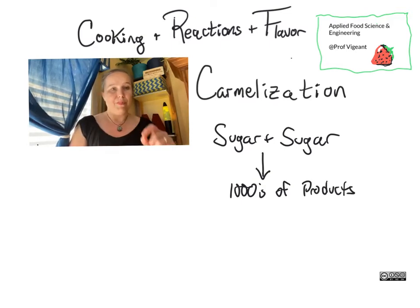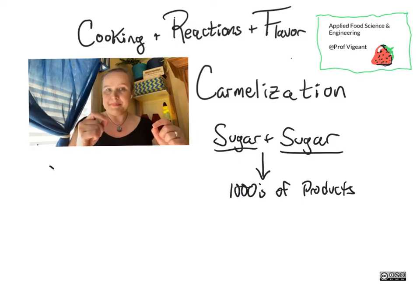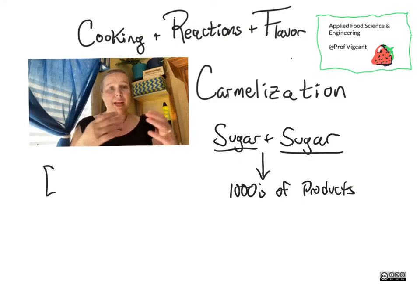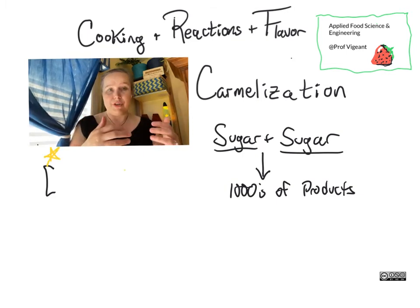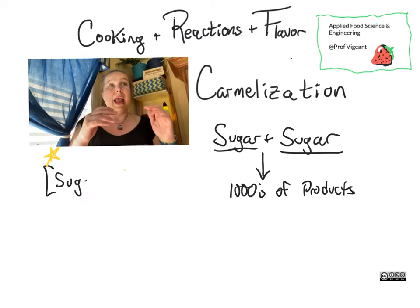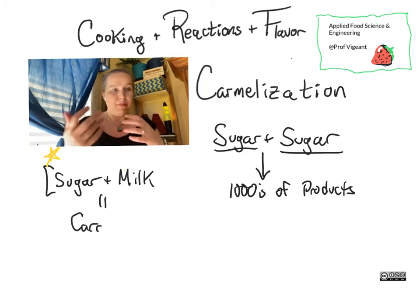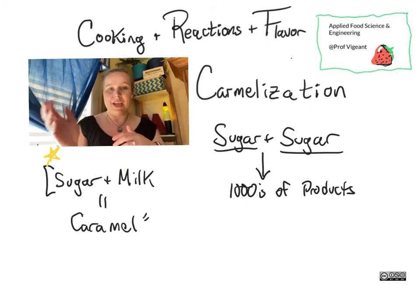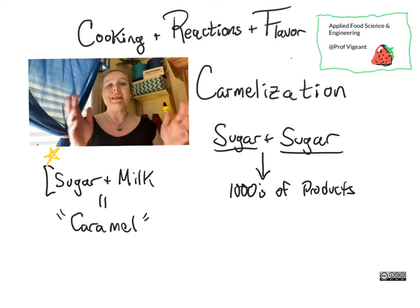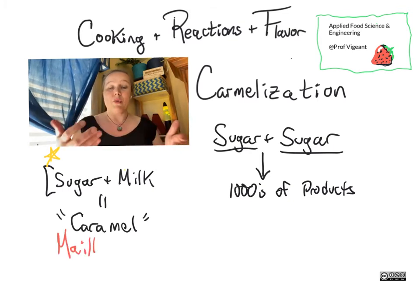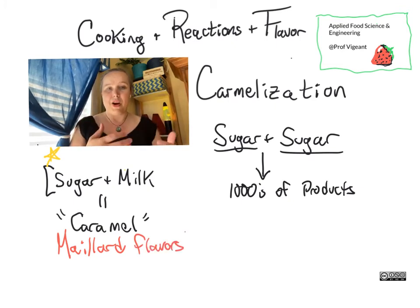Caramelization is specifically the reaction of sugar with another sugar. As with the Maillard reactions, since we have dozens of different sugars that might be reacting and a whole bunch of products that might arise, this is about a family of reactions, a family of products, and a family of reactants. There are many thousands of things that may arise when we conduct a caramelization reaction.